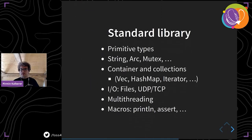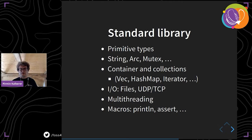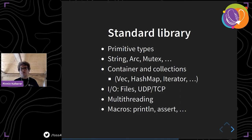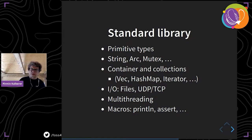The standard library of Rust contains functionality on primitive types, string functionality, Arc, Mutex, and so on. It has containers and collections: vectors, hash maps, iterators. It has support for file IO and network IO, multi-threading functionality, and core macros like print and assert.